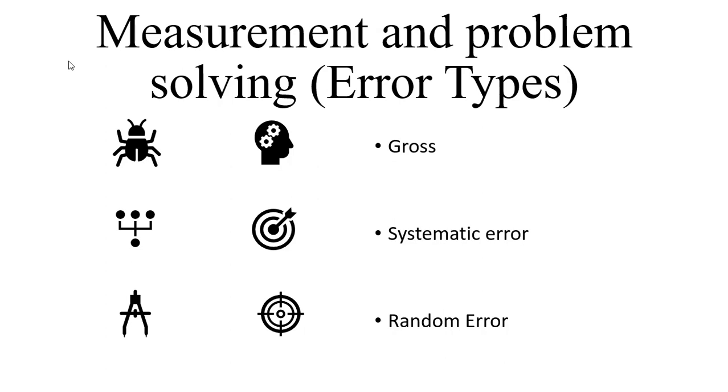Let's take a look at three types of error: gross error, systematic error, and random error. Gross error.